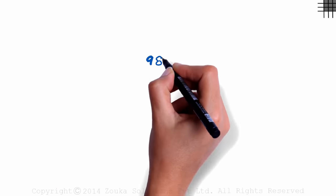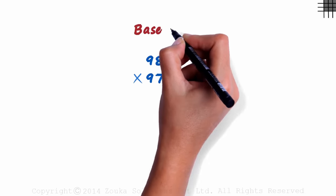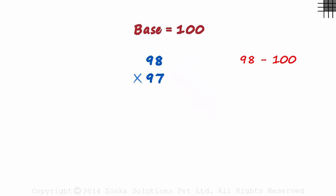Say we want to multiply 98 with 97. Both these numbers as we can see are close to 100. So the base is 100 here. 98 minus 100 is minus 2. And 97 minus 100 is minus 3. Then we make a partition. On the left we write the sum and on the right we write the product. 98 plus minus 3 is 95. Even 97 plus minus 2 will give us 95. And minus 2 times minus 3 is 6.